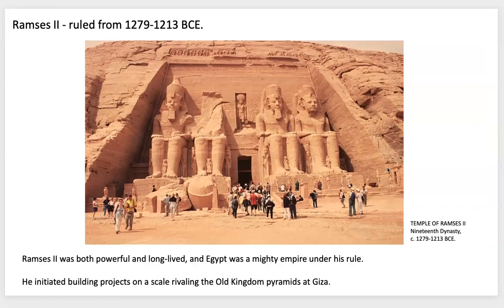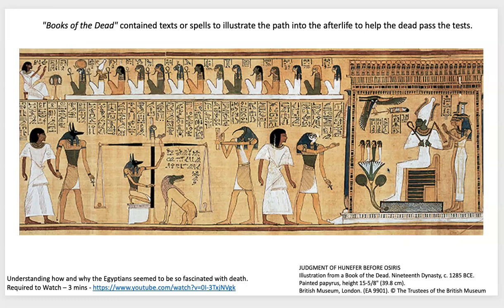The Ramses period continued honoring the old traditional ways, building massive complexes, tombs, and rock-cut tombs to show their power and might. Finally, the Book of the Dead is also important and discussed in your reading. To me, what it really symbolizes is like a text of spells — almost like a cookbook — that would illustrate how you get into the afterlife: what you need to do, what you need to say to the different gods, and how you need to live your life to get into this amazing afterlife.